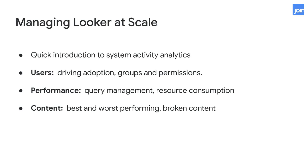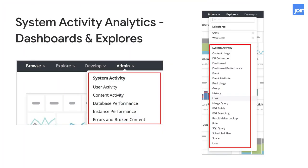Every time someone logs into Looker, runs a query, a scheduled query runs, or content like a dashboard or explorer is accessed, Looker logs that information. We automatically model it and present it to the Looker administrator via system activity analytics. System activity analytics provides you with five pre-built dashboards and a set of explorers so you can really drill into the data of how Looker is being used and the performance of Looker in your specific instance.